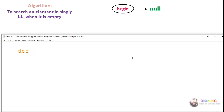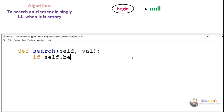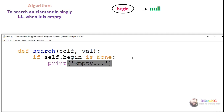This is the algorithm to perform searching an element in a singly linked list. For that purpose we are writing a search method inside the linked list class with parameter val. Val is the data what we are searching for. When the linked list is empty, that means begin is None — we display that it's empty and we will not be able to perform the search operation, so we return from the method.